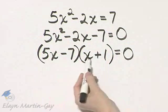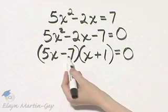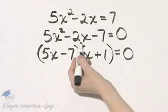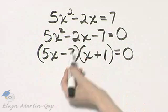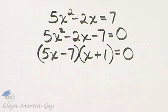Let's check. That's 5x squared, 5x minus 7x. That's negative 2x or minus 2x. And then last times last is minus 7.